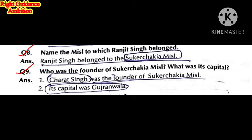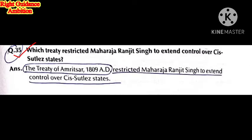The next question: name the misl to which Maharaj Ranjit Singh belonged. He belonged to the Sukar Chakia misl. The next question: who was the founder of the Sukar Chakia misl and what was its capital? The founder was Charat Singh and its capital was in Gujrat.